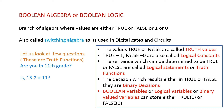Now we will look at Boolean algebra, or Boolean logic — it is the same thing. Boolean algebra is a branch of algebra where the values it deals with are either 1 or 0, or we can also say true or false. It is mainly used in digital circuits, since digital circuits deal with 1s and 0s, and that is why it is also called switching algebra. To understand it further, let us look at a few questions.